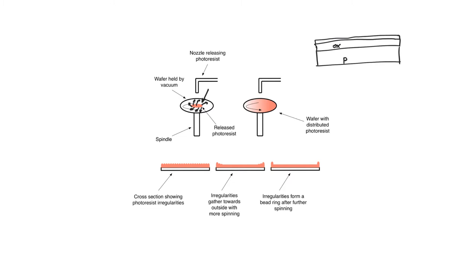When we start to rotate the wafer, we initially spread out the photoresist but end up with a wave-like pattern on top. This wave-like pattern is due to the interaction of air with the fluid surface of the photoresist, which is a very viscous liquid and shows some resistance as it spreads. We spin a little faster, and these waves gather towards the outside, eventually forming beads on the very outer rim of the wafer.